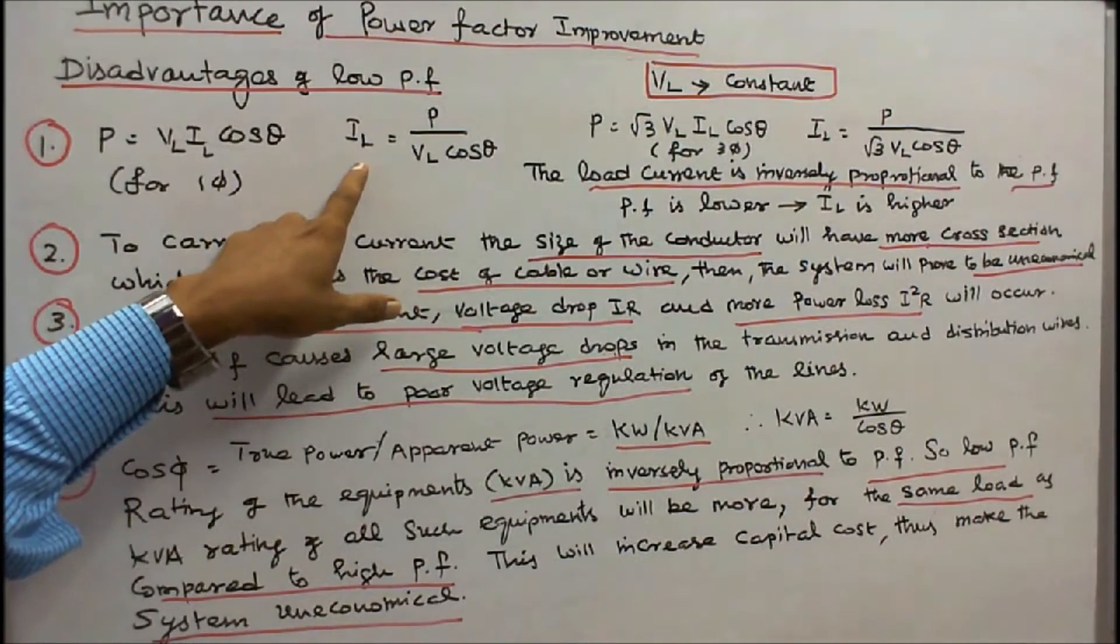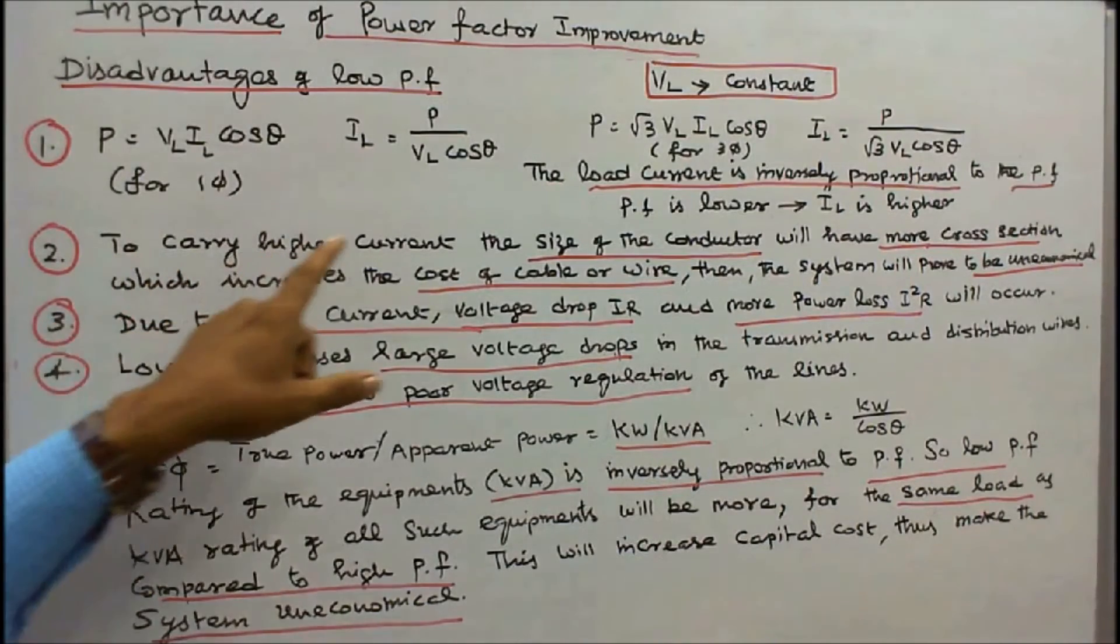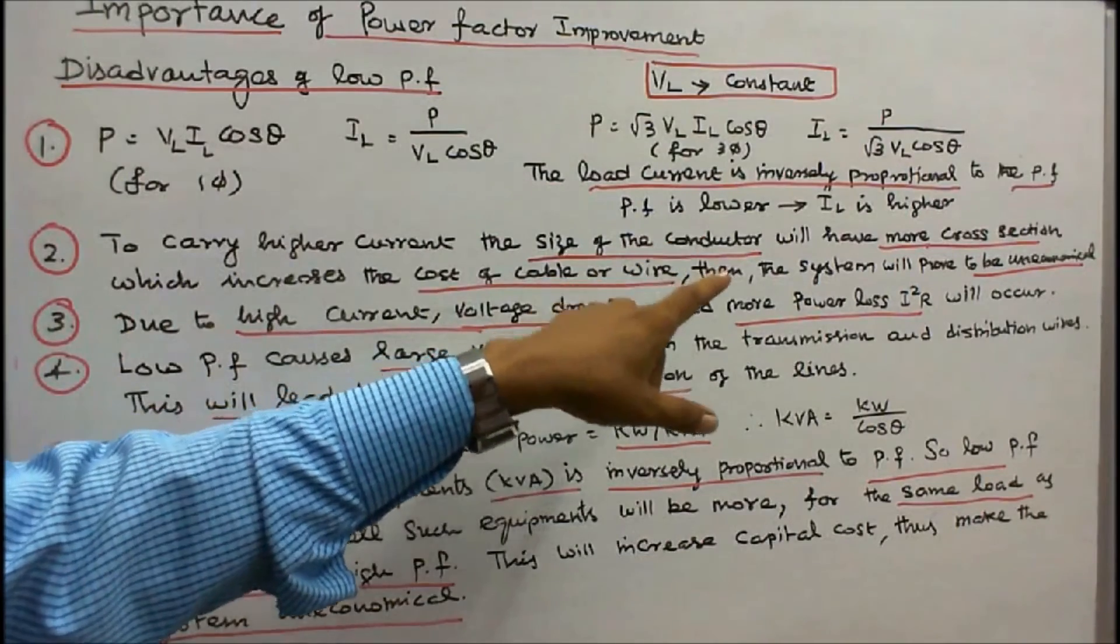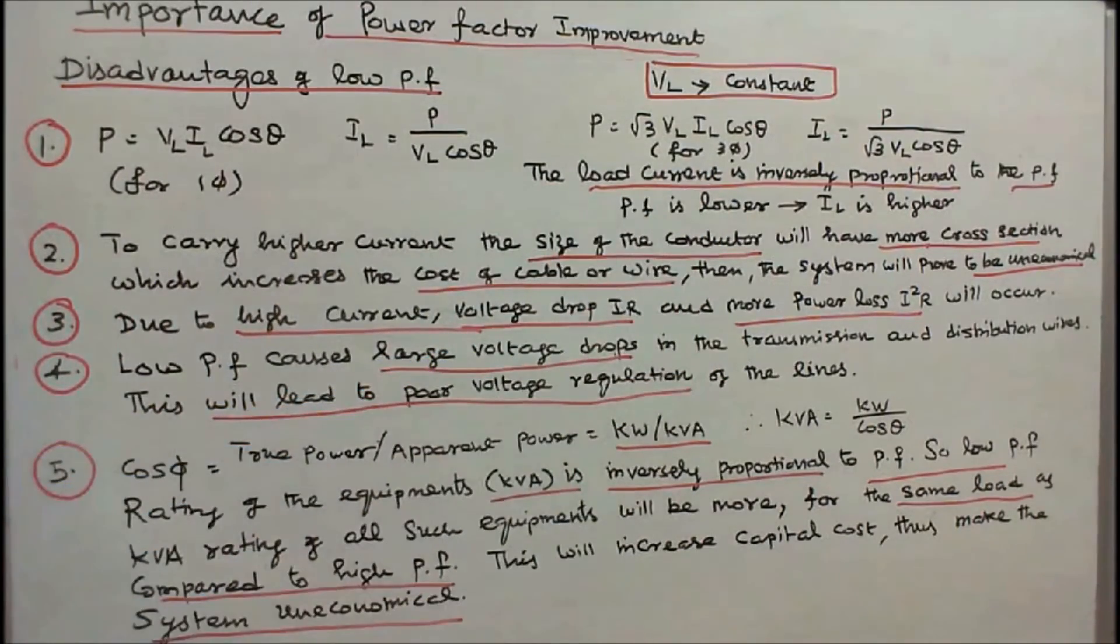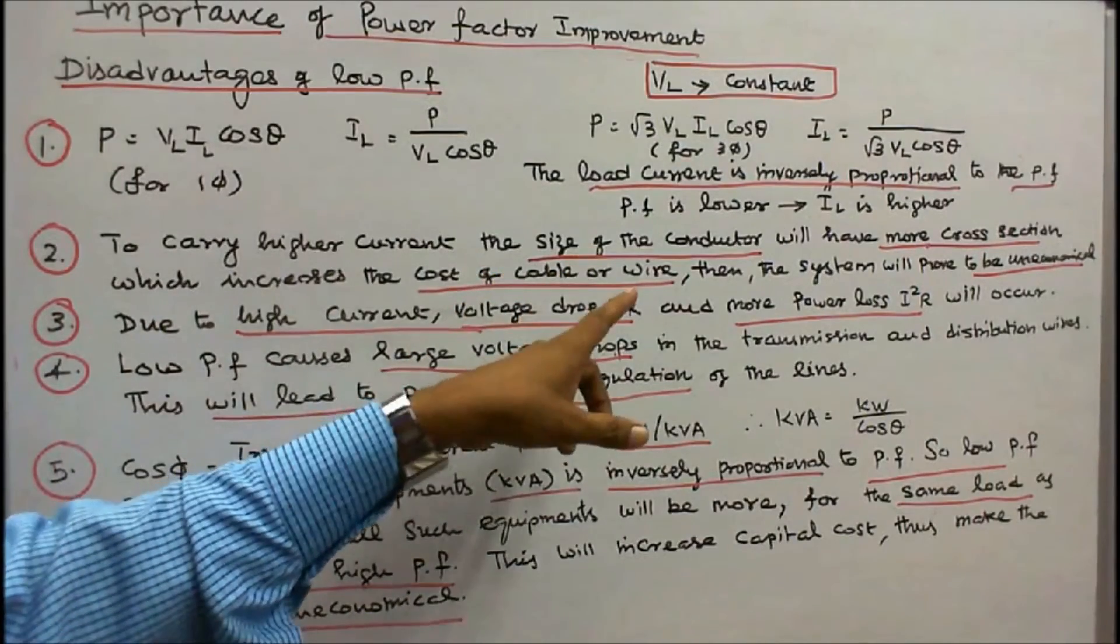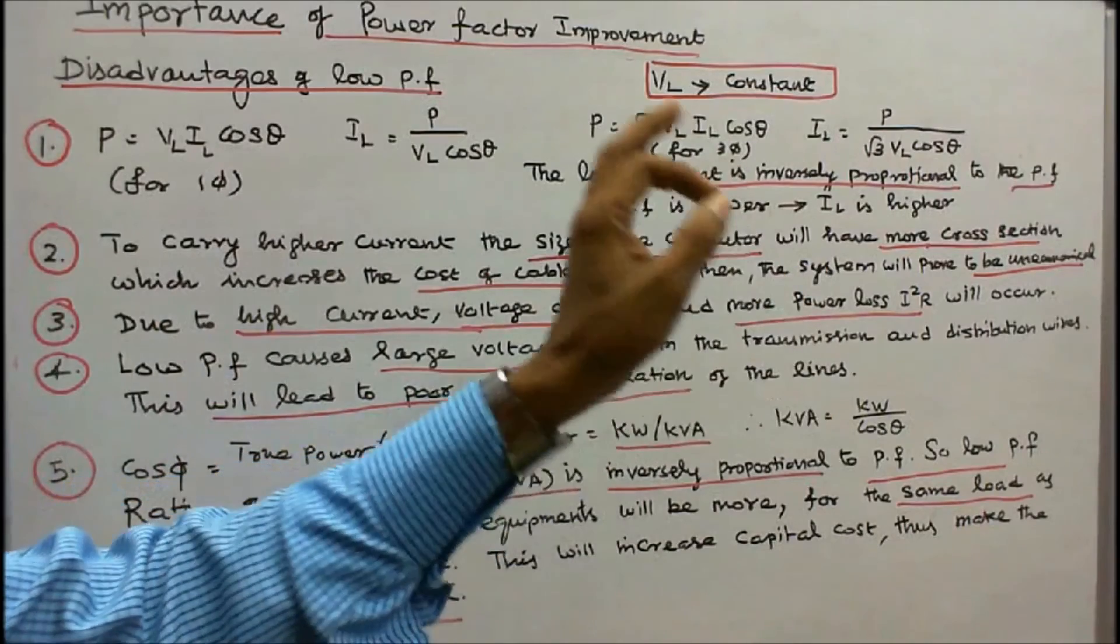Number 2: To carry higher current, the size of the conductor will have more cross section, which increases the cost of the cable or wire. Then the system will prove to be uneconomical.